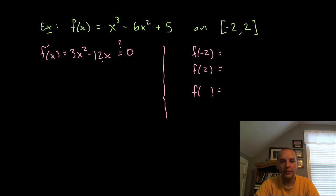I'll set that equal to zero and ask when is the derivative zero? Where are my critical points? I'll pull out a common factor of 3x. I'll have x minus 4 equals zero. So either x is zero or x is four. So these are my critical points.